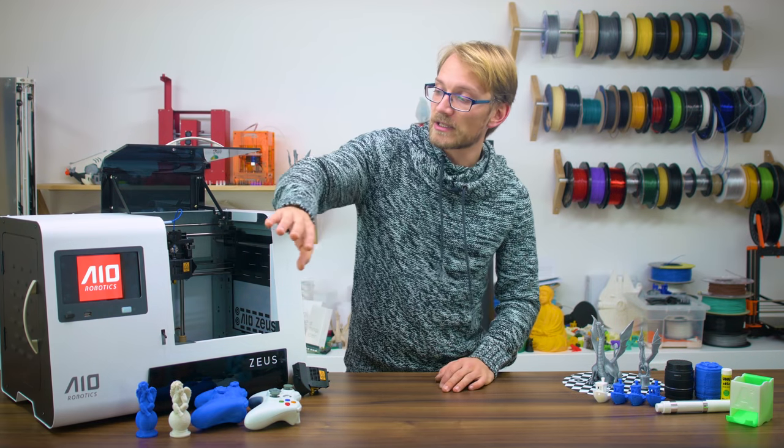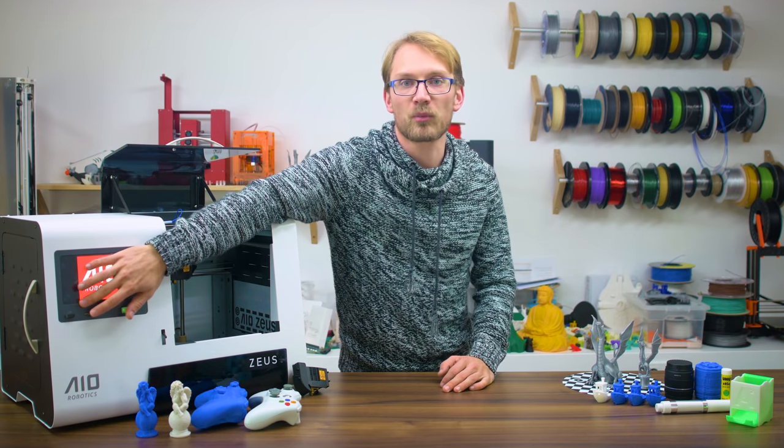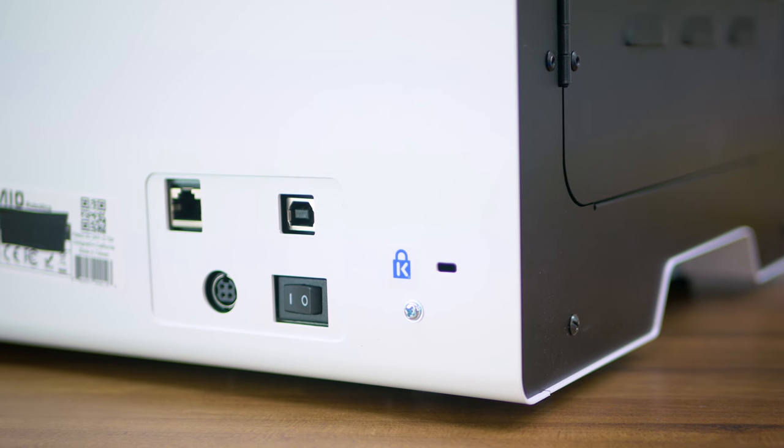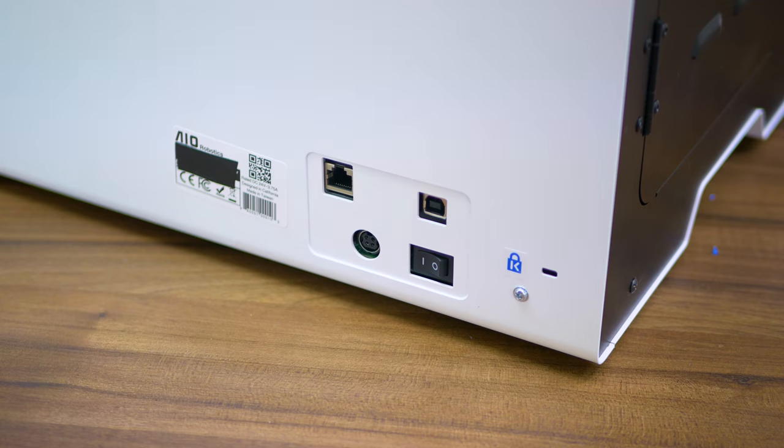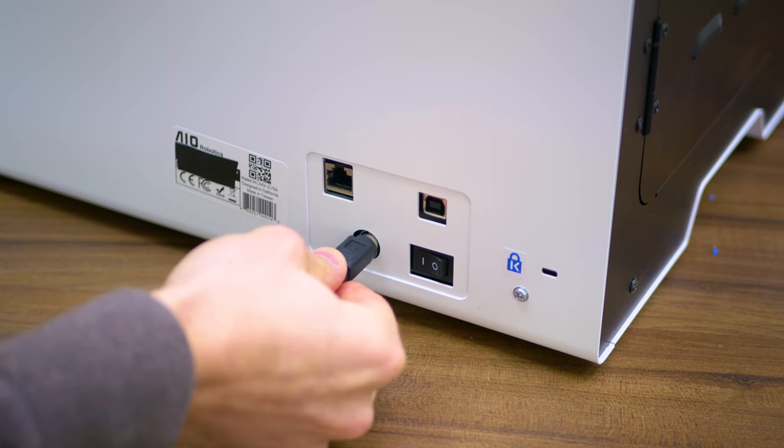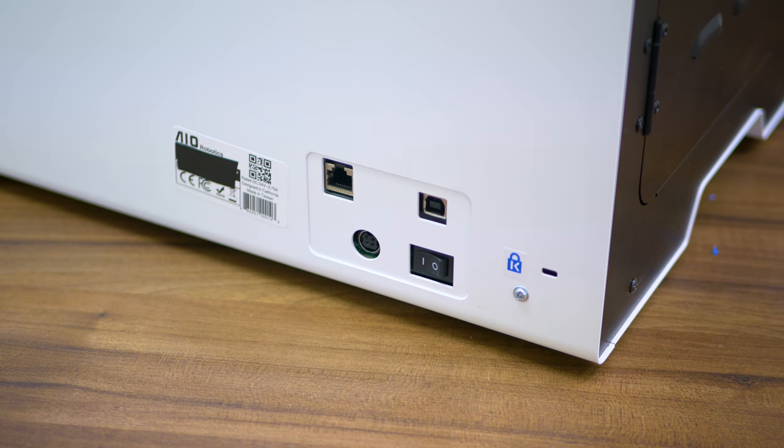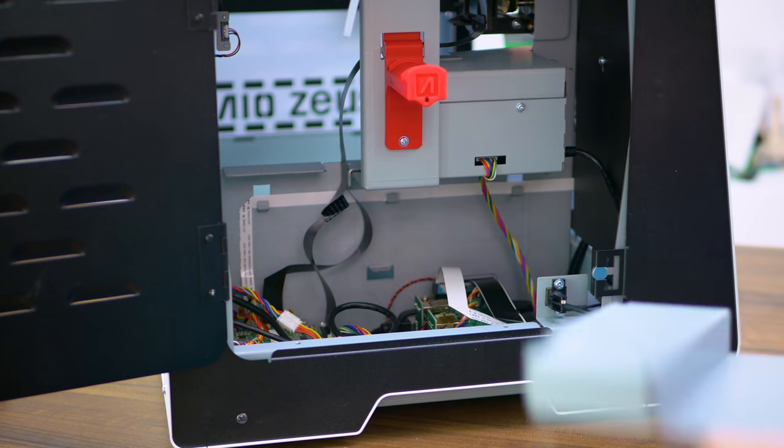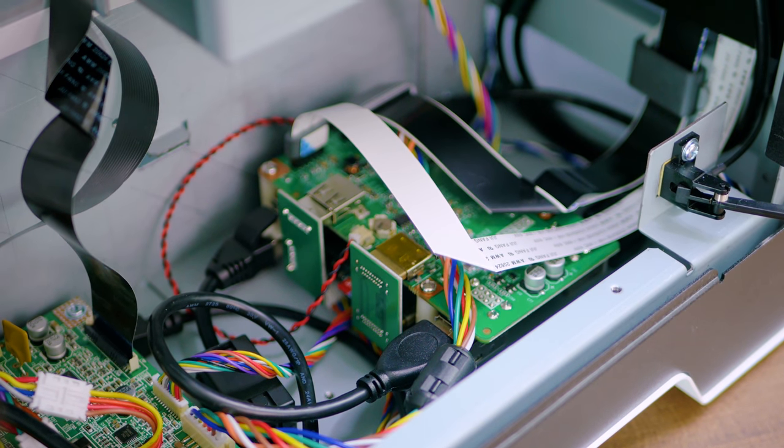The Zeus is quite heavy but easy to lug around with the built-in handles on the bottom. On the front, there's a really comfortably sized 7-inch capacitive touchscreen with two USB ports. On the back, there's a Kensington lock cutout, a USB slave and Ethernet port, a power switch and the power input jack, which unfortunately is rather loose and not a locking type like the Ultimaker's. It doesn't quite slide out on its own, but I did manage to pull it out in a heartbeat once, thinking it was the USB port.